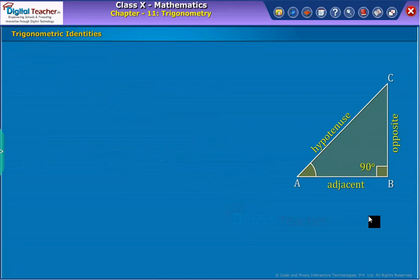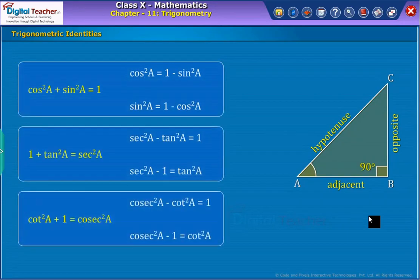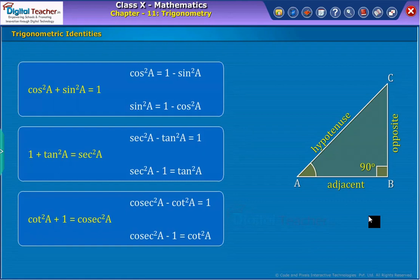Now let us list out all the identities together. The above identities and some more identities obtained by performing simple algebraic operations like addition and subtraction on the previous identities are listed below for quick review.